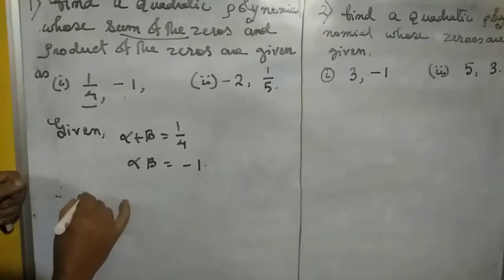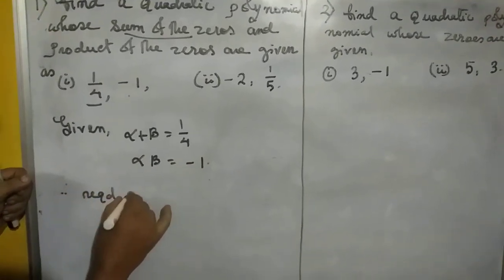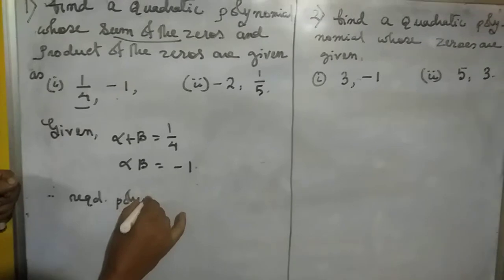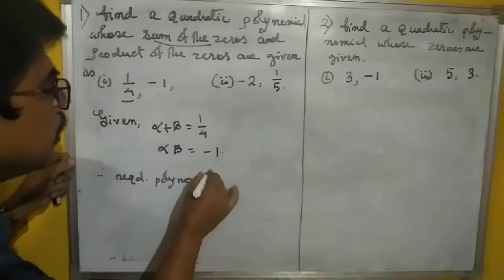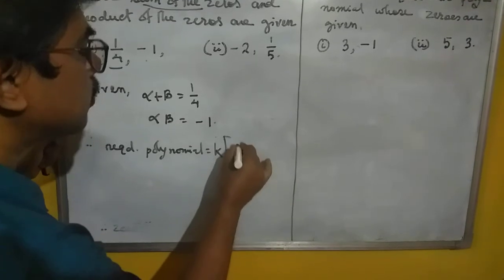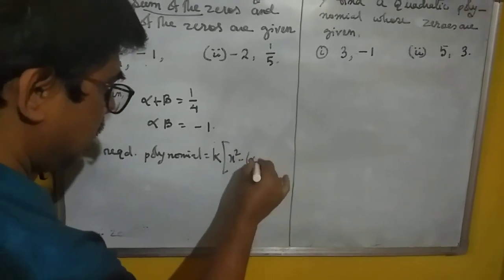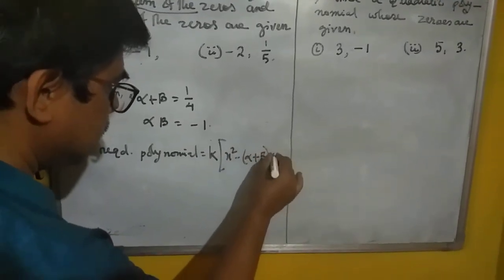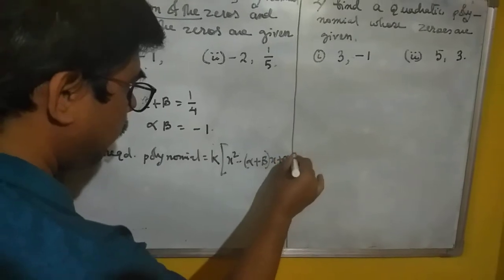So therefore, required polynomial will be k into x square minus alpha plus beta x plus alpha into beta.